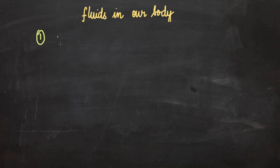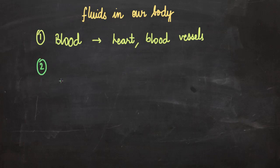The first important fluid in our body is the blood. This blood is present in the heart and also in certain blood vessels. These blood vessels are arteries, veins, or capillaries. The second important fluid of our body is the tissue fluid.